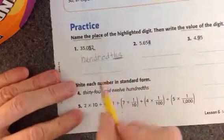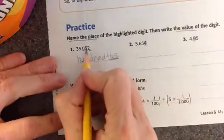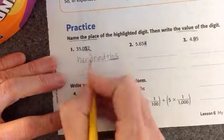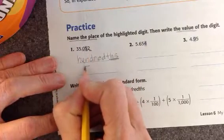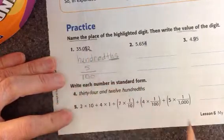Then you're going to write the value. When I do the value, I look at what the digit is, it's a five, and it's in the hundredths place, so it is five hundredths. That would be the value.